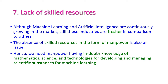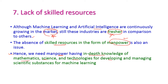Machine learning and artificial intelligence are continuously growing in the market, but still these two technologies are dominating with only pressures when compared to other markets. The absence of skilled resources including manpower is also a very big issue. We need manpower with in-depth knowledge of mathematics, science, and technologies for developing and managing machine learning technology. Hence, lack of skilled resources is another problem in machine learning.